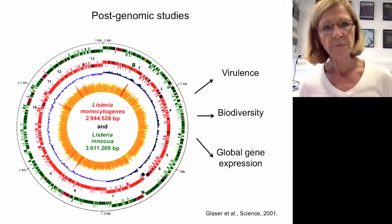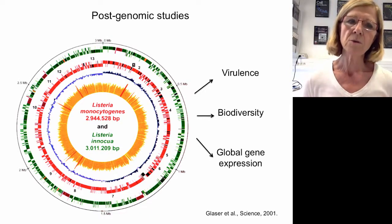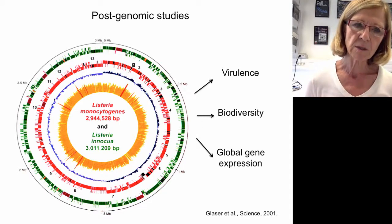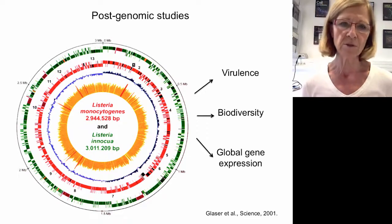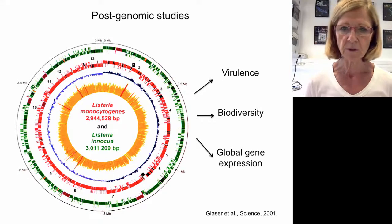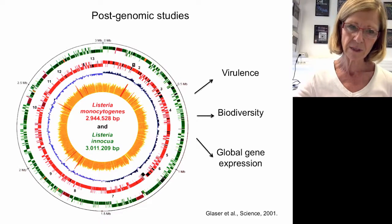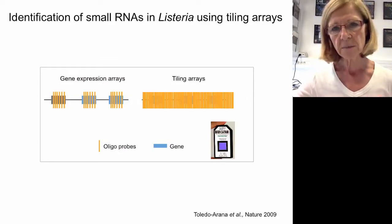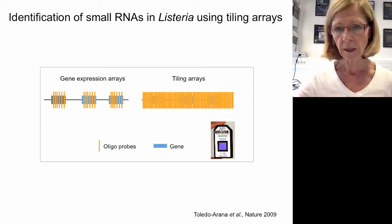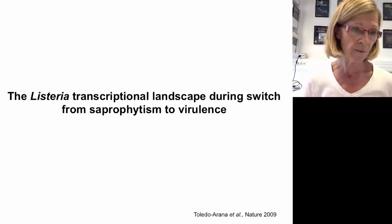At that stage we had already sequenced the genome of L. monocytogenes and L. innocua. Our goal was to use these sequences to extract genes present only in monocytogenes and absent in innocua that could encode virulence factors. We also planned to carry out global gene expression experiments. The key step in our search for regulatory RNA was the use of tiling arrays — Listeria-specific tiling arrays. We grew bacteria in different conditions, extracted RNA, hybridized it on the tiling array, and were able to describe the Listeria transcriptional landscape during the switch from saprophytism to virulence.